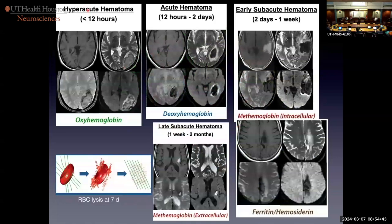Diffusion weighted imaging shows that acute blood does restrict. Now the acute hematoma: as we get more and more deoxyhemoglobin, it will fill in the clot. We go from iso-intense — because there's no methemoglobin yet — to dark, because deoxyhemoglobin has powerful magnetic susceptibility. There's some edema around it, and it gets bigger and blacker on GRE. On the DWI, I think this is T2 blackout — pure magnetic susceptibility artifact. Look how the pattern of edema is different from the high signal on diffusion weighted image — that's because this is magnetic susceptibility artifact in addition to edema.